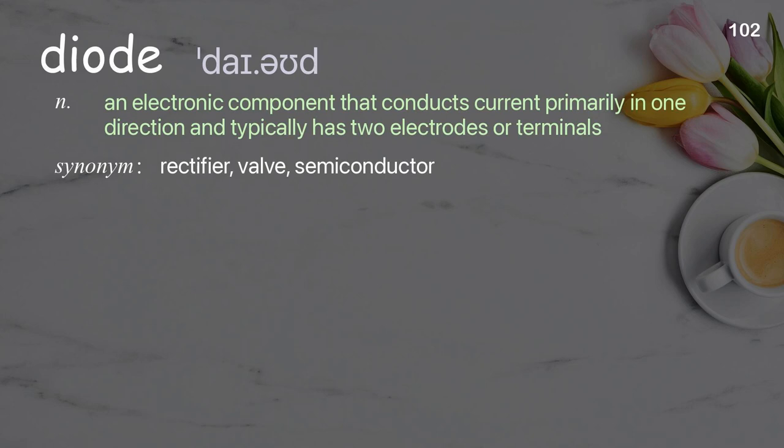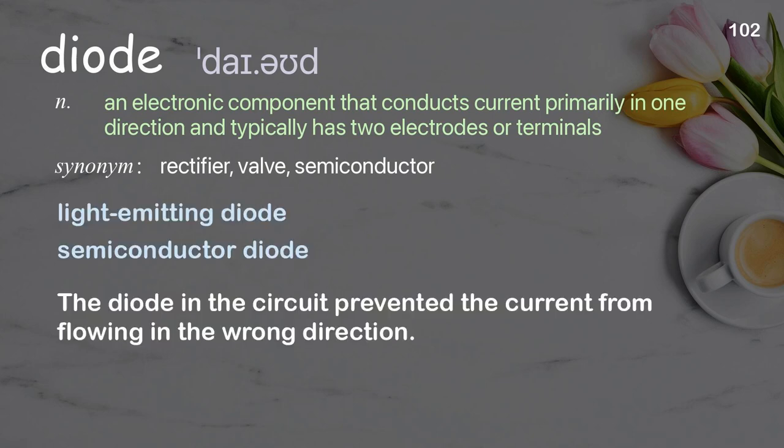Diode: an electronic component that conducts current primarily in one direction and typically has two electrodes or terminals. Examples: light-emitting diode, semiconductor diode. The diode in the circuit prevented the current from flowing in the wrong direction.